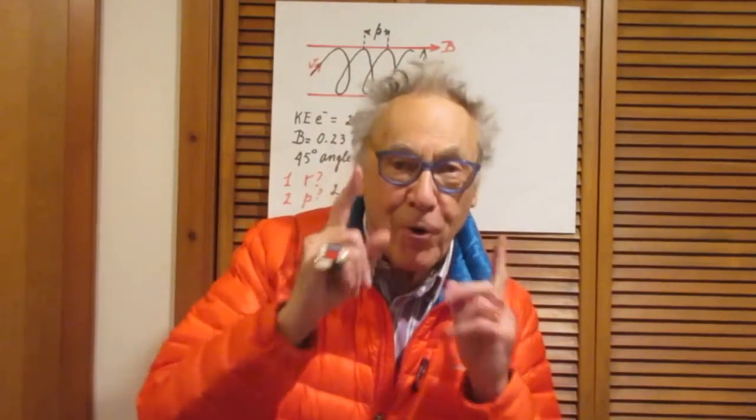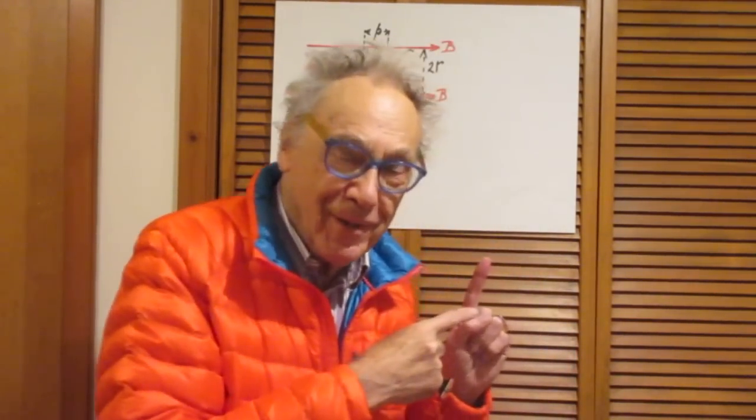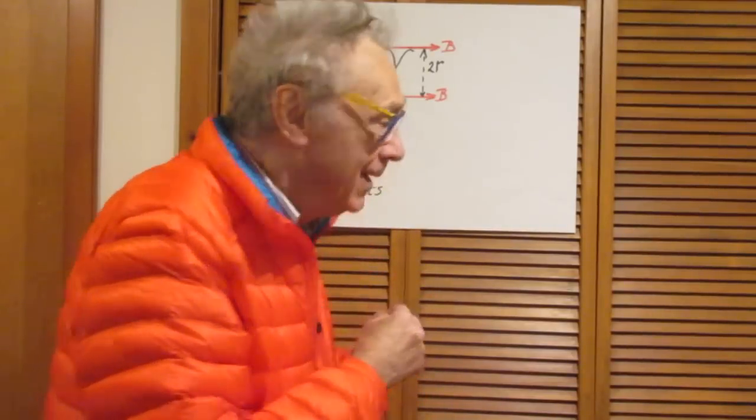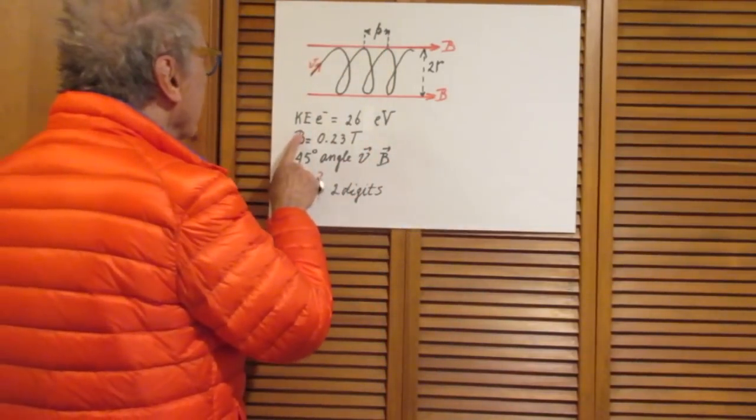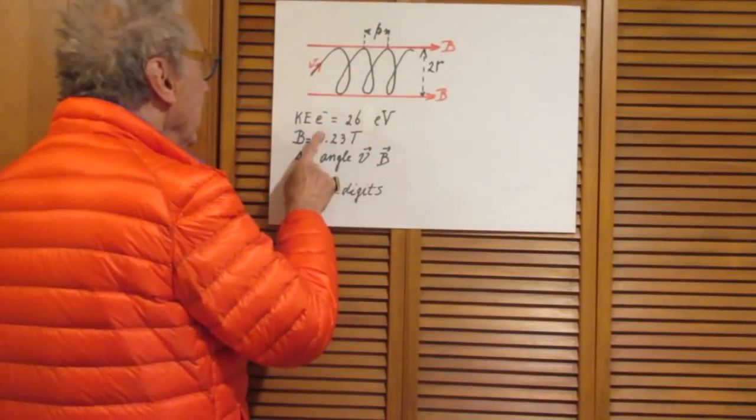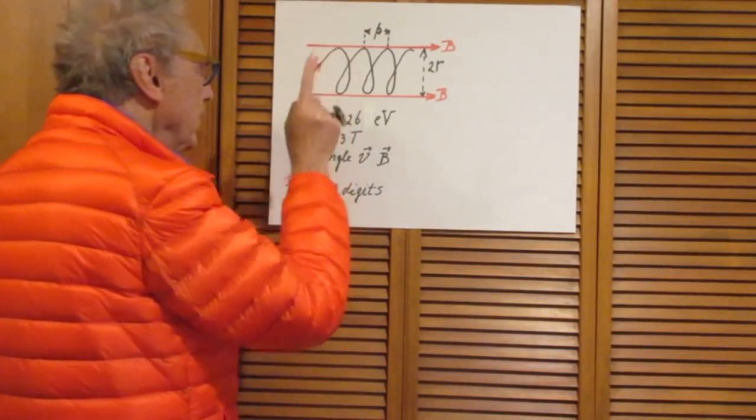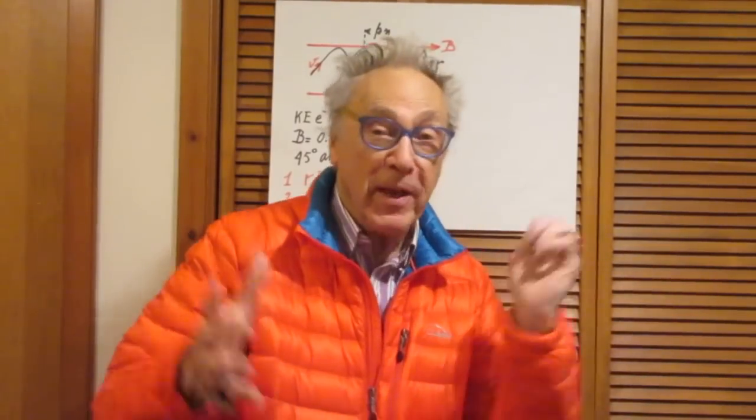I forgot to mention, but of course it was rather clear. I forgot to mention that the strength of the magnetic field is 0.23 Tesla. Okay? So you now have everything. Good luck!